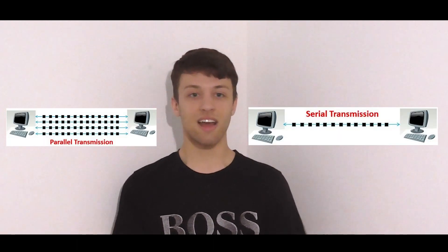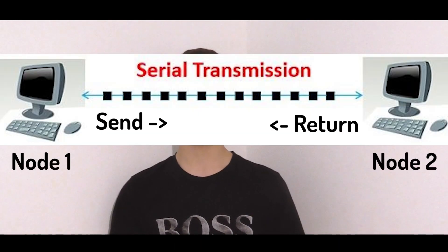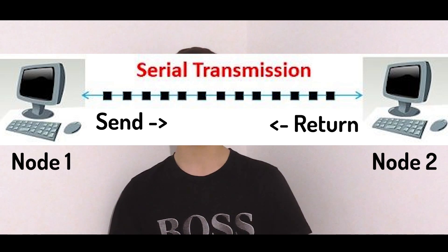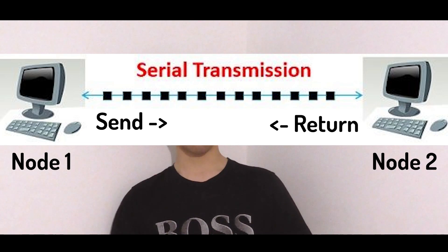There are two main types of how data is actually transmitted: Parallel and Serial. Serial data transmission is a method of transferring data one bit at a time over a single communication channel. In this process the data is sent sequentially in a continuous stream. The bits are transmitted one after the other, typically using a single wire or pair of wires for transmission and reception.